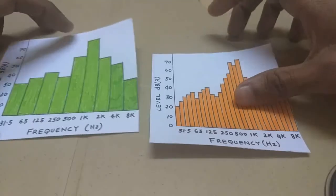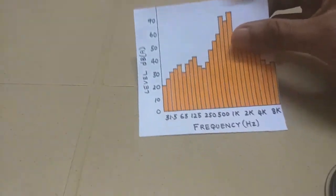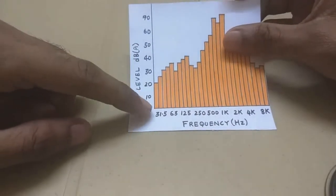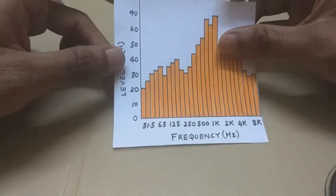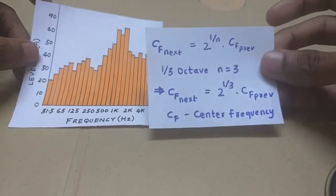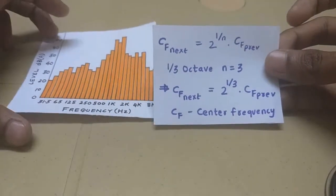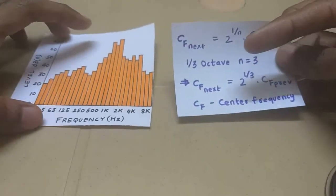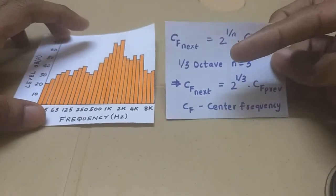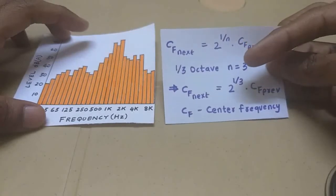Alright, now let's get to the math. We're going to determine what are the center frequencies and the upper and lower limit for each band. The center frequency of next band is 2 power 1 by n times center frequency of previous band. Since you're considering octave 1/3rd octave, you put n equals 3.